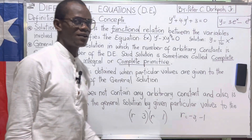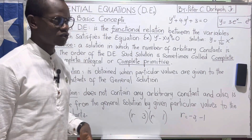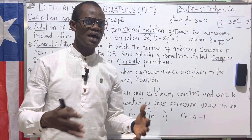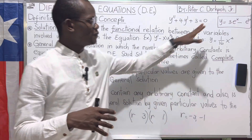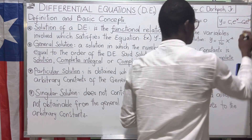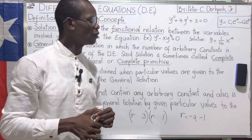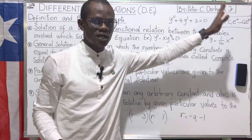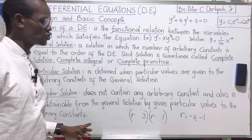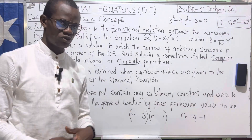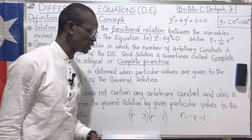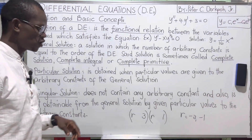If you solve a differential equation and arrive at a solution that does not have arbitrary constants — unlike the general solution — and also that solution is not obtainable from the general solution, then that solution is called a singular solution.